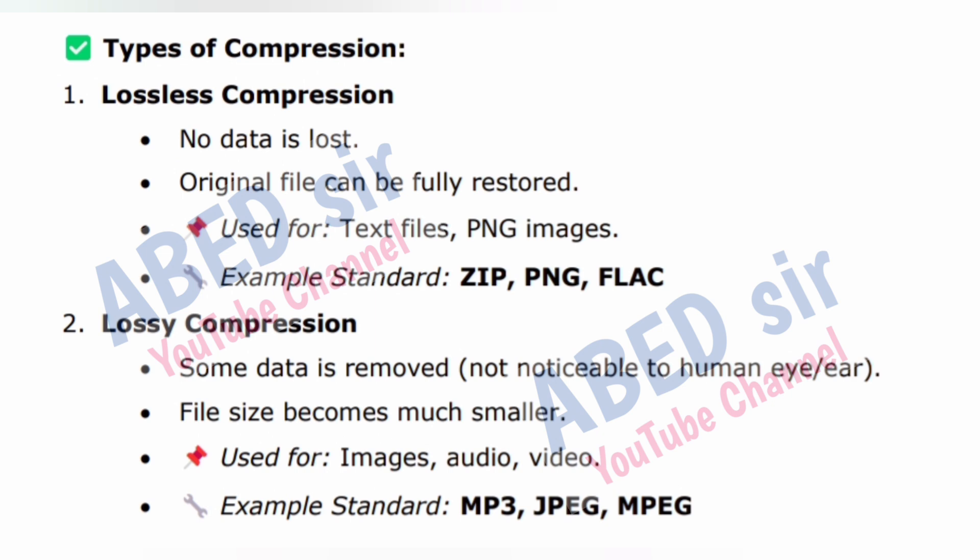Types of compression. 1. Lossless compression: no data is lost, original file can be fully restored, used for text files and PNG images. Example standards: ZIP, PNG, FLATE. 2. Lossy compression: some data is removed, not noticeable to the human eye or ear, file size becomes much smaller, used for images, audio and video. Example standards: MP3, JPEG, MPEG.